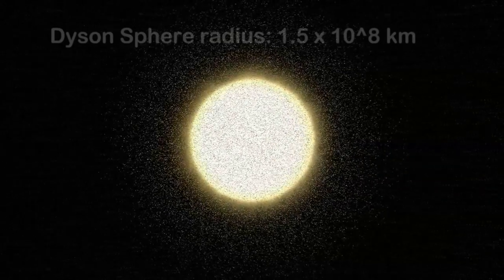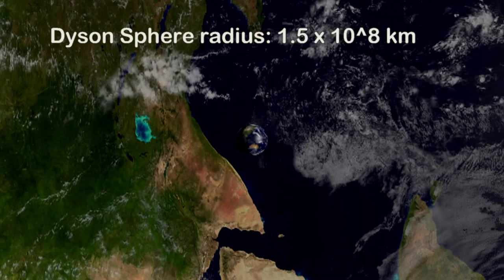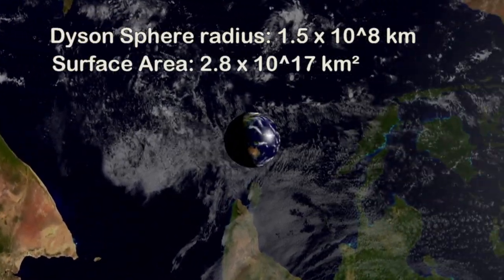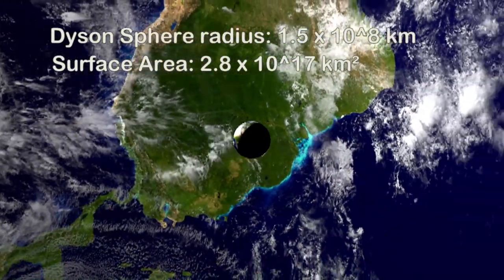It is easier to think of it as a solid spherical shell when contemplating the numbers. Such a sphere would generally have a radius of Earth's distance from the Sun, 1.5 × 10^8 kilometers, and an area of 2.8 × 10^17 square kilometers. In terms of Earth, that is just over half a billion times the area.